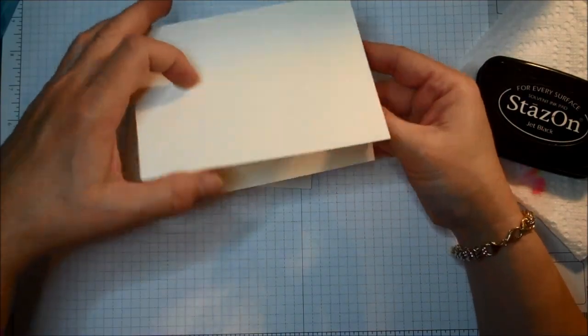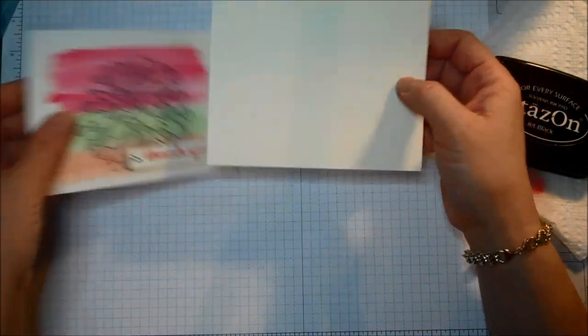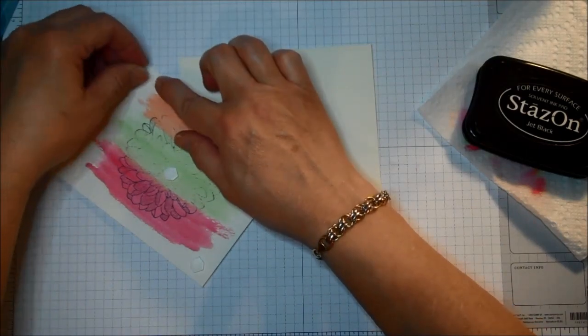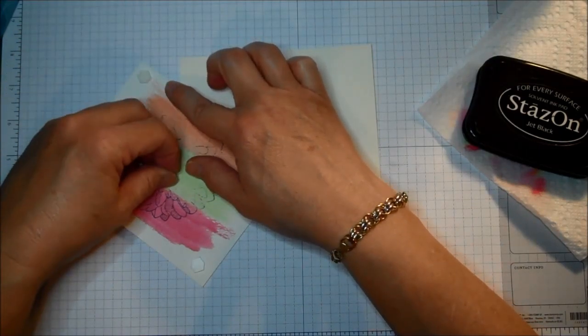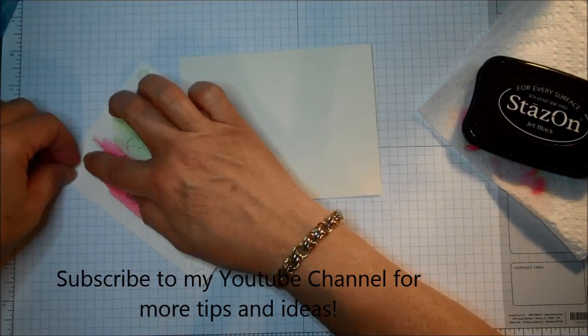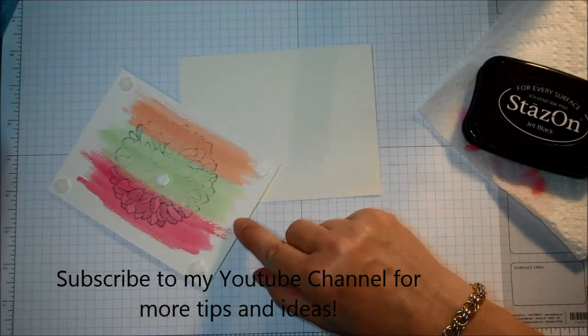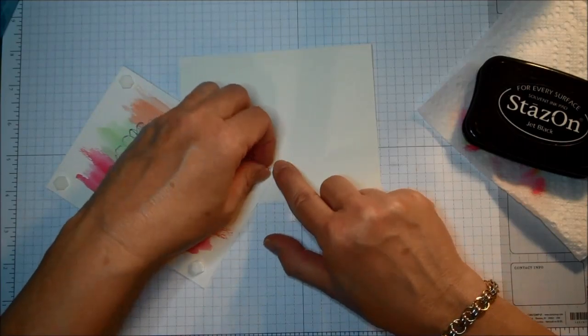I have a piece of Very Vanilla, 5 and a half by 8 and a half, scored at 4 and a quarter. And I'm just keeping it very tone-on-tone. You could add one of the colors that you use for the ink. You could add a matte if you wanted to. But I just want to keep this very simple.